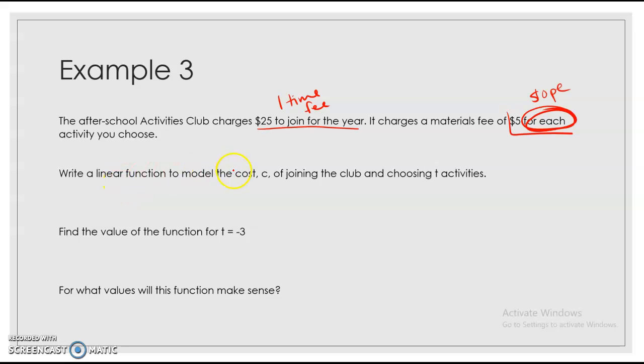So we're going to write a linear function to model our cost, C. So that's the same as Y, of joining the club and choosing T activities. And so our T is going to be the same as our X. All right. So we're going to do C equals. We know that we are charged $5 for each activity we choose. So that's going to be 5T plus the one-time yearly fee of $25. So this is our function for joining the club and choosing activities.